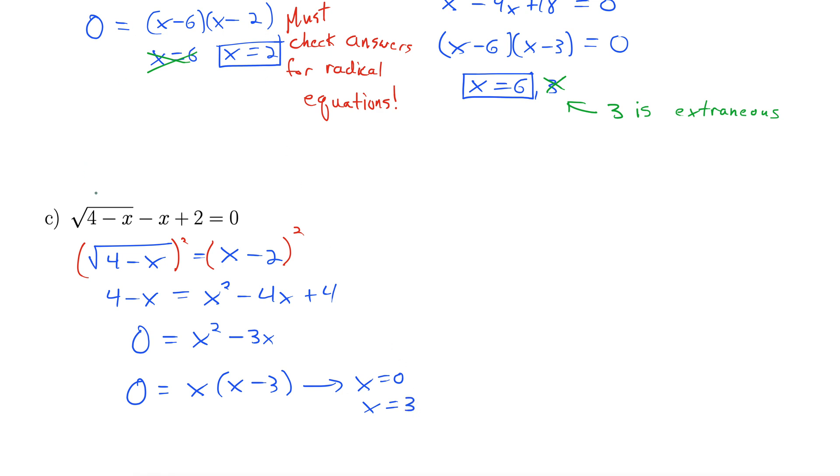Okay, let's check these in the original equation. Let's start with x equals 0. If we plug in 0 here for x, we'd get square root of 4, which is 2, minus 0, plus 2. Well, 2 plus 2 is 4, not equal 0. So, x equals 0 is out. That doesn't check out.